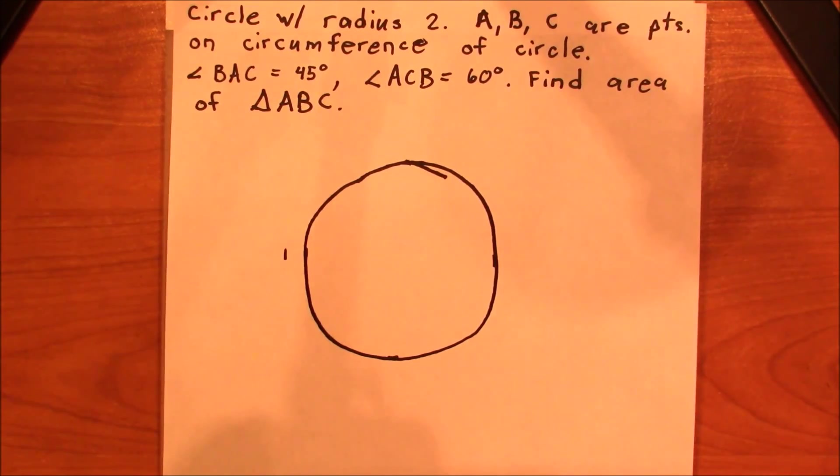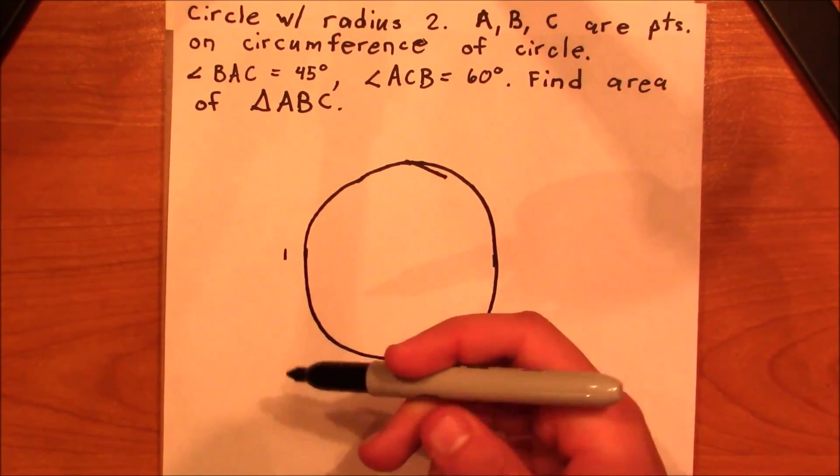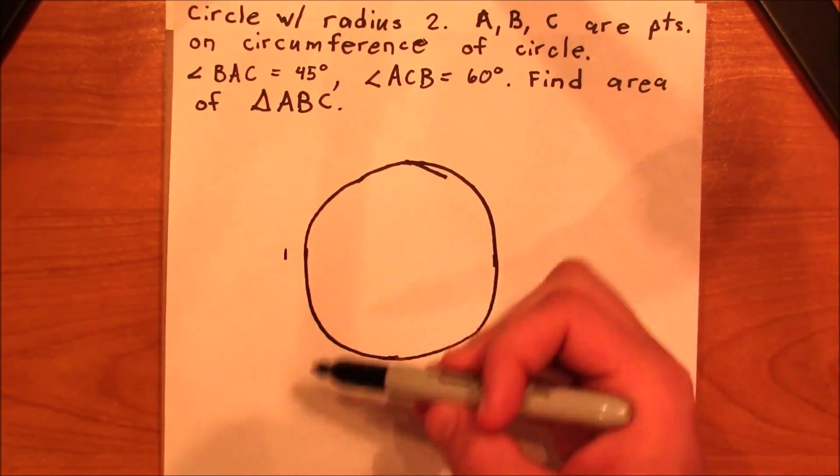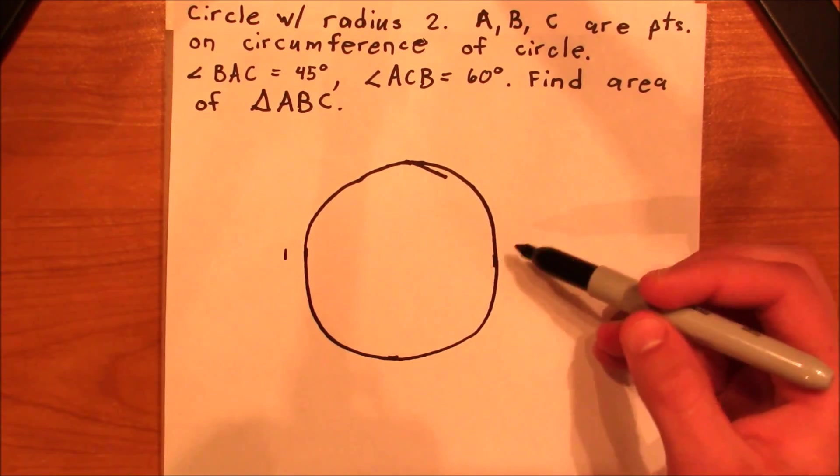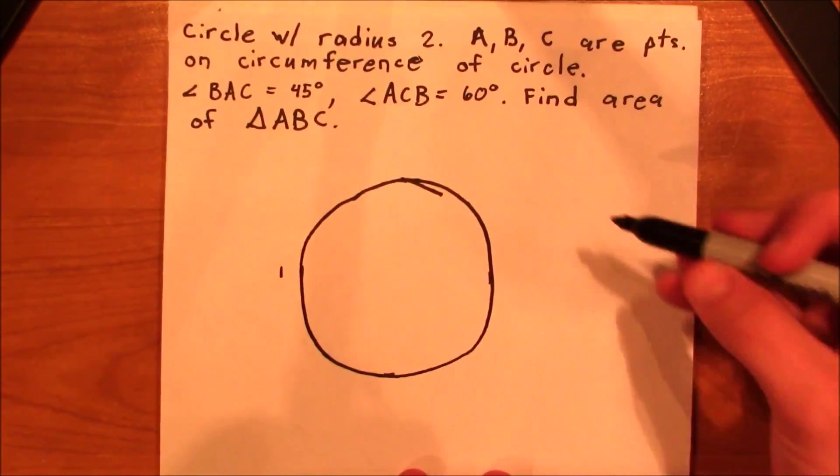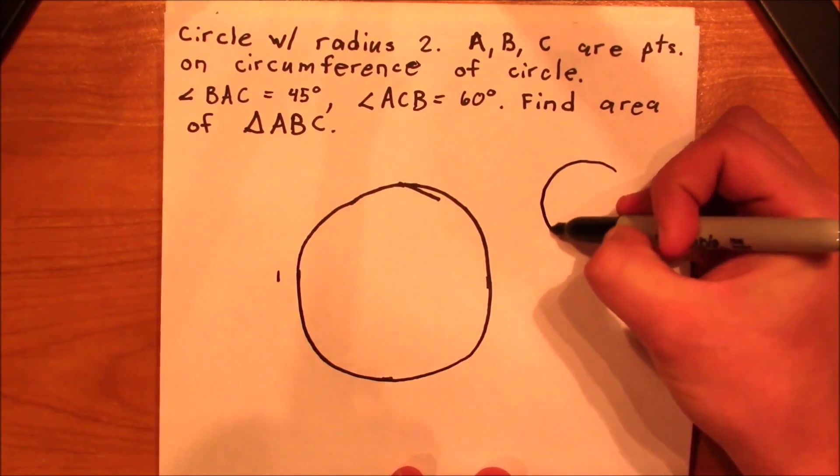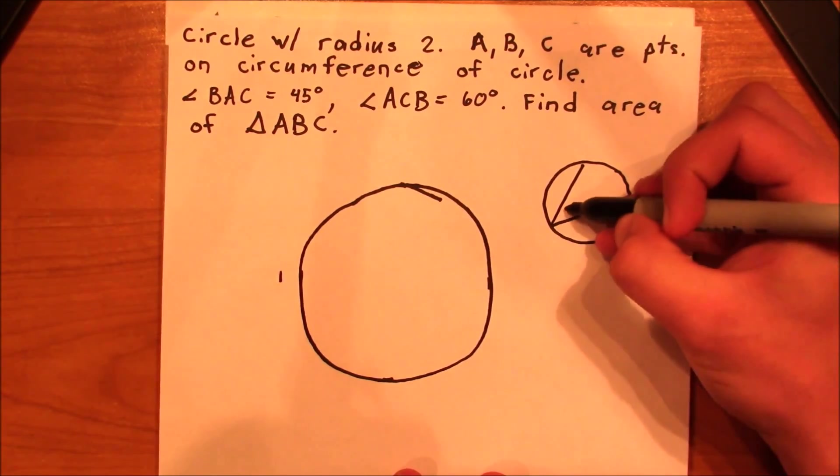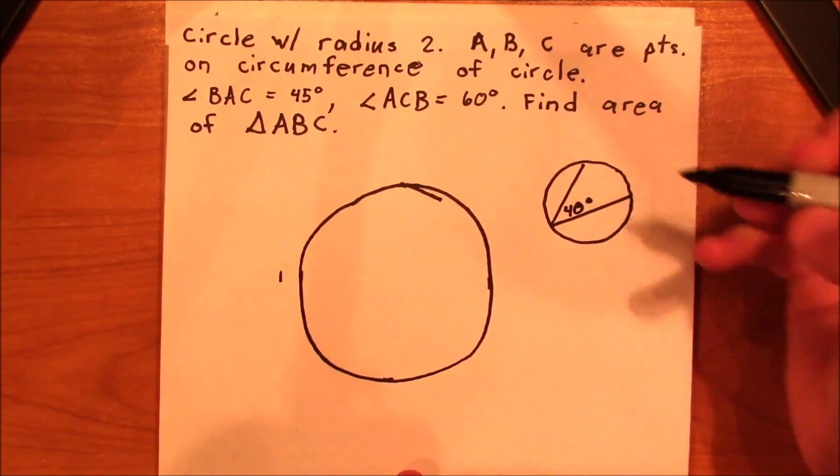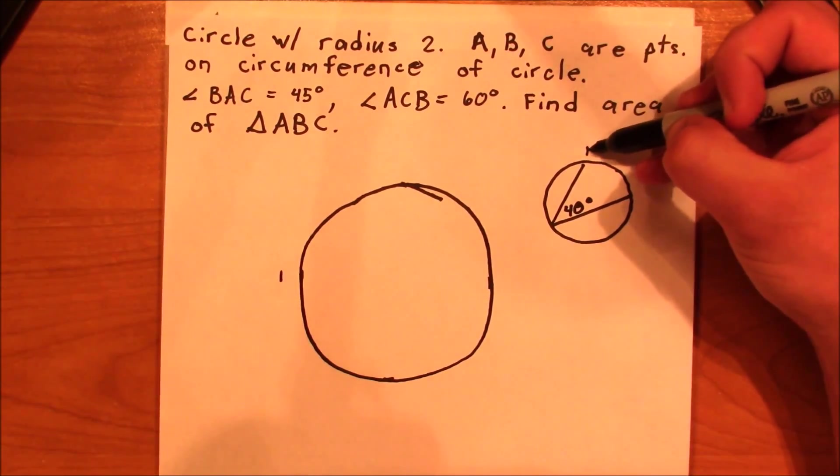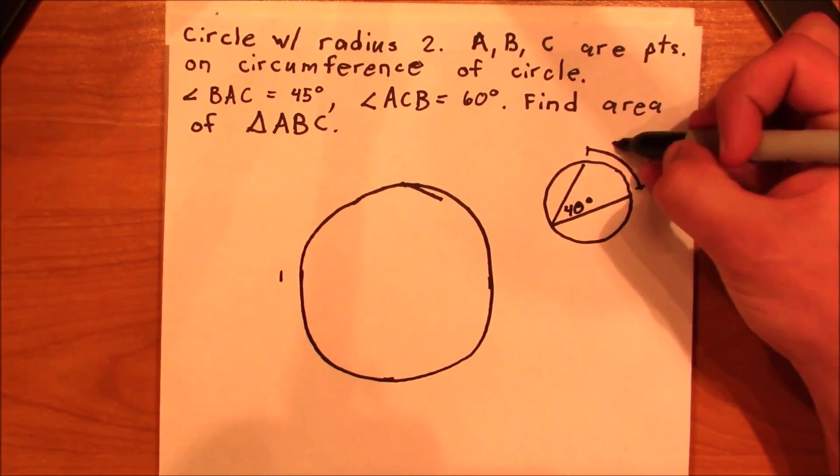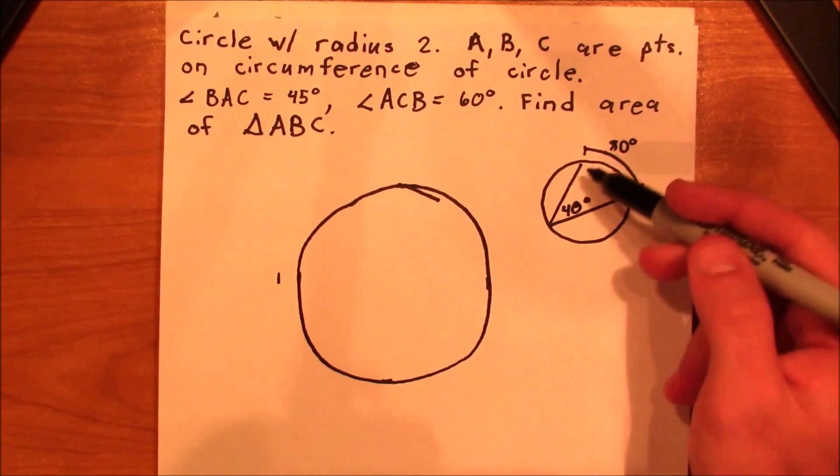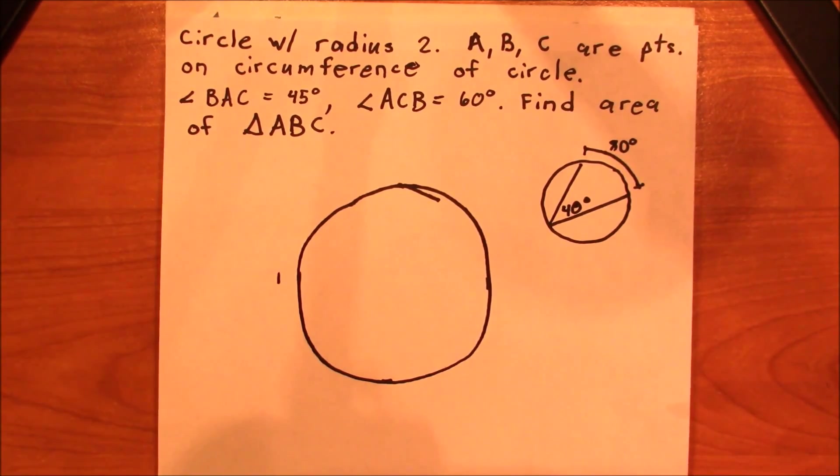The first thing that we need to recognize is that since these points are going to be on the circumference of the circle, then the angles that they form are going to be twice as long on the arc. So what do I mean by that? If we have a circle over here, and I have an angle, let's say that this is 40 degrees, the arc length over here is going to be 80 degrees. This is a theorem that we've learned earlier in trig.